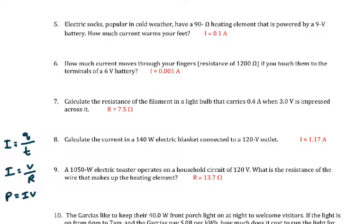The last one I want to look at is number nine. We have a 1050 watt electric toaster operating on a household circuit of 120 volts. So 1050 watts is power. And then 120 volts is voltage, of course. The question is, what is the resistance? So R is our question mark. Take a look at our equations. I've rewritten them here on the side.